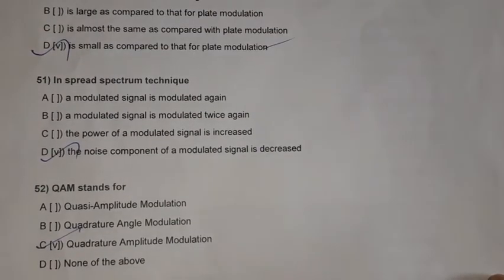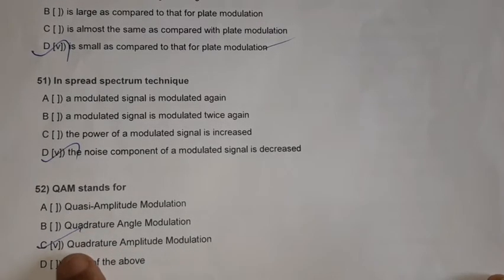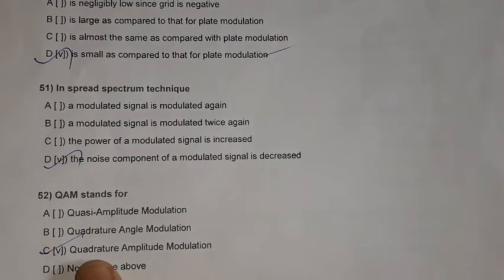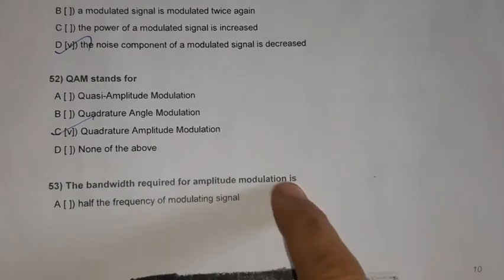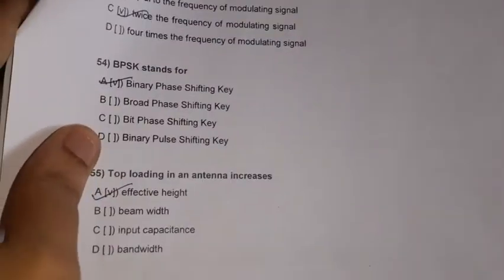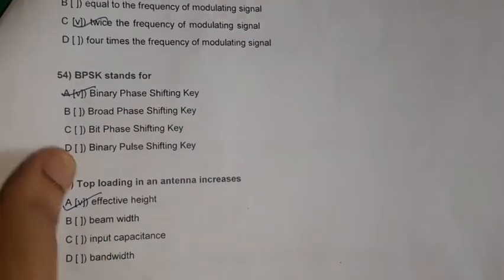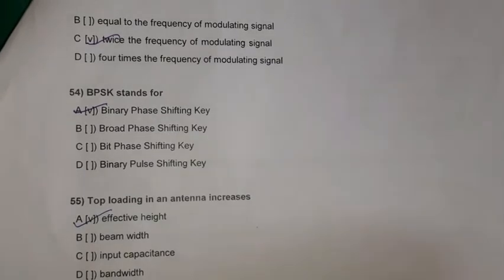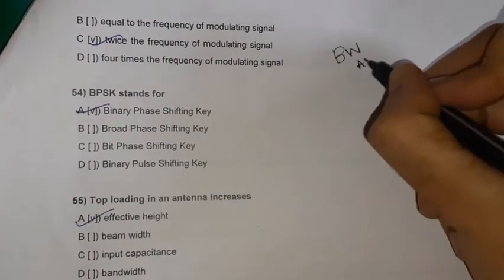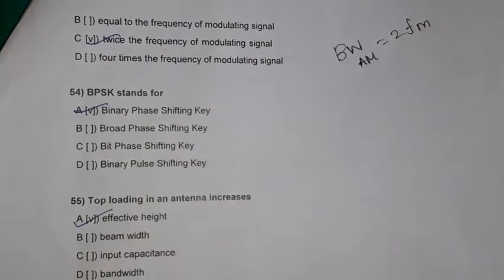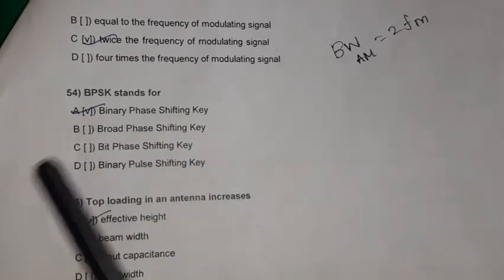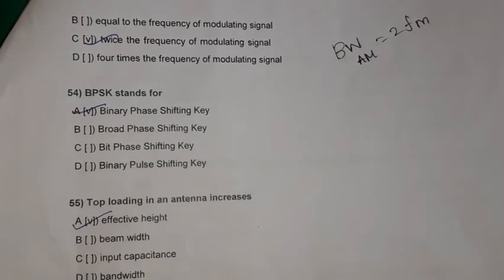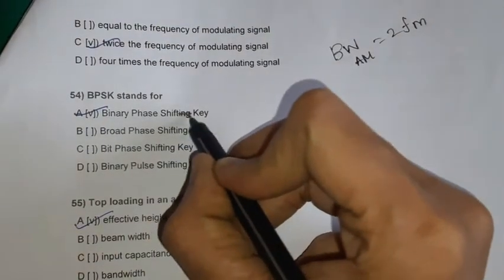Question 52: QAM stands for quadrature amplitude modulation. Question 53: The bandwidth required for amplitude modulation is twice the frequency of the modulating signal — bandwidth for AM equals 2 × FM. Question 54: BPSK stands for binary phase shift keying.